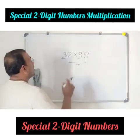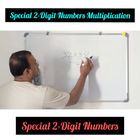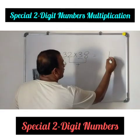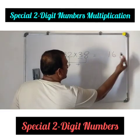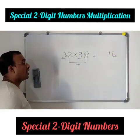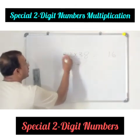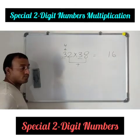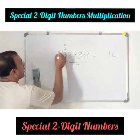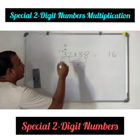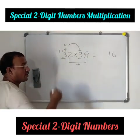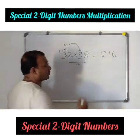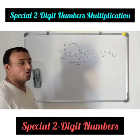So when we have these special 2-digit numbers, we do the multiplication this way. We multiply the ones place digits first: 8 times 2 is 16, and we start writing from the right side corner. Then we take the tens place digit and add one more — that is plus 1 — so we get 4. Then we multiply 4 by the tens place digit: 4 times 3 is 12. So the answer is 1216.